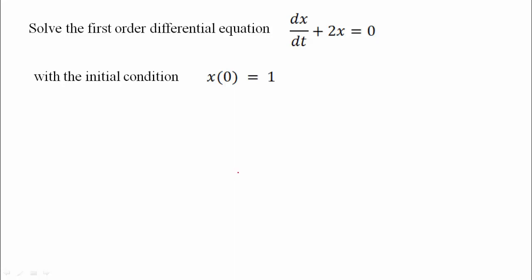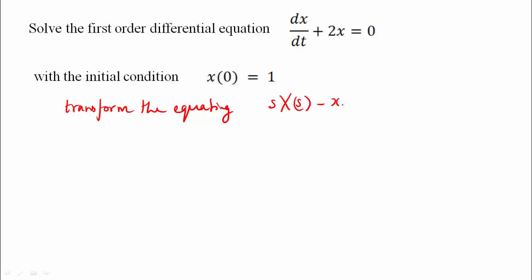Now we have to solve this using network theory by transforming the circuit and the equation using Laplace transform. The Laplace transform of d/dt of x gives s·X(s) minus x(0), where x(0) is the initial condition, plus 2 times X(s) is equal to 0.